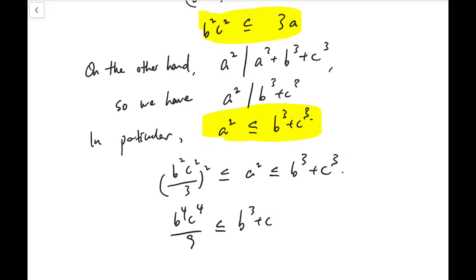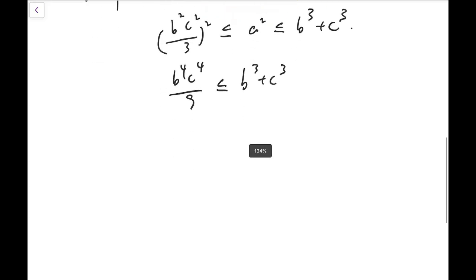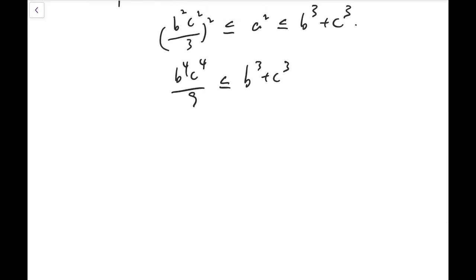Now I'm going to use these two inequalities and combine them together. So b squared c squared over 3 whole squared is less than or equal to a squared, and is also less than or equal to b cubed plus c cubed. So b to the 4, c to the 4 over 9 is less than or equal to b cubed plus c cubed. Now that's very interesting because the left-hand side, the smaller side, has degree 8, and we're talking about positive integers, so b and c must be very, very small.